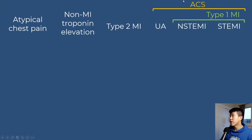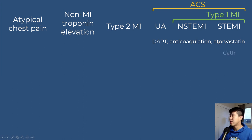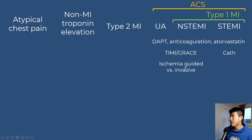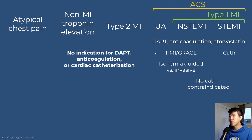Reviewing the big picture: for all ACS and type 1 MI conditions, initial treatment is dual antiplatelet therapy, anticoagulation with heparin or Lovenox, and atorvastatin for plaque stabilization. STEMI goes to cath; unstable angina and NSTEMI use the TIMI or GRACE score for risk stratification. For non-MI troponin elevation and type 2 MI, there is no indication for dual antiplatelet therapy, anticoagulation, or cardiac catheterization.